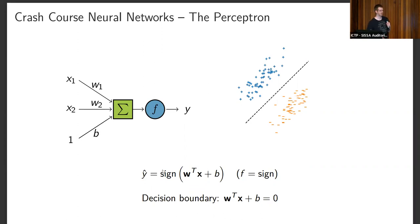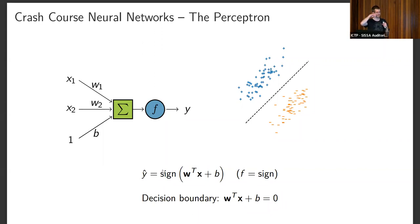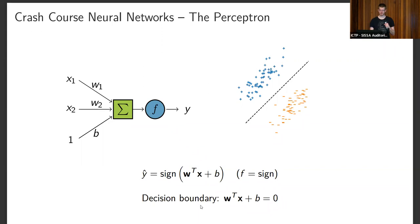The origins of neural networks come from biological modeling of the brain — there's some activation coming into a neuron, and at some point the neuron fires and sends a signal to the next neuron. This gives us a decision boundary — in two dimensions it's a line, in 3D a plane, and in higher dimensions a hyperplane.